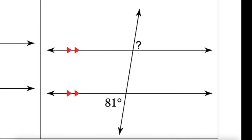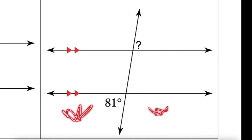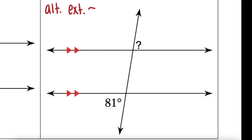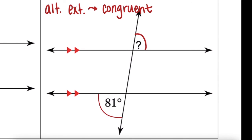Last one. These angles are on alternate sides of the transversal and both in the exterior of the parallel lines — these are alternate exterior angles. From our exploration, alternate exterior angles are congruent when lines are parallel. So if this angle measures 81 degrees, the missing angle is also 81 degrees.